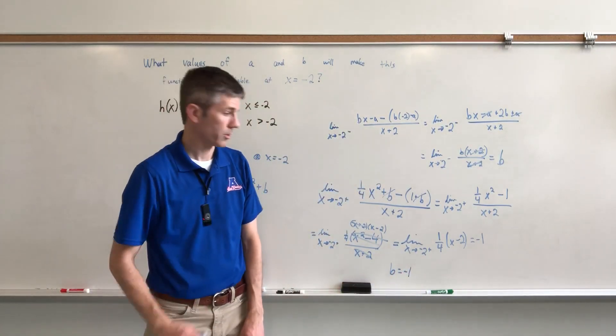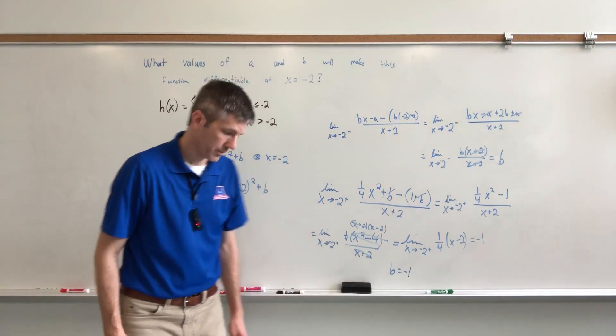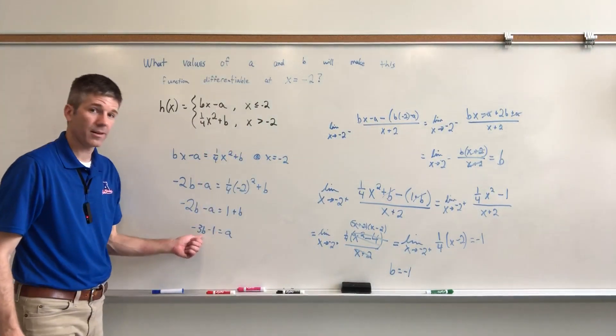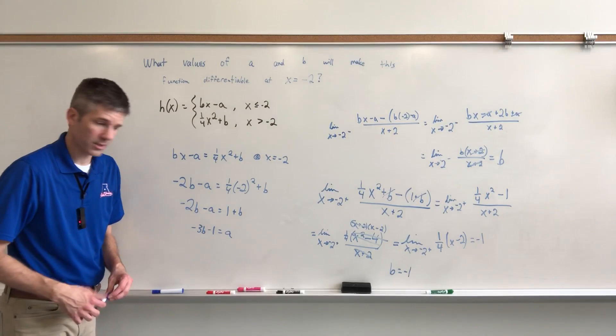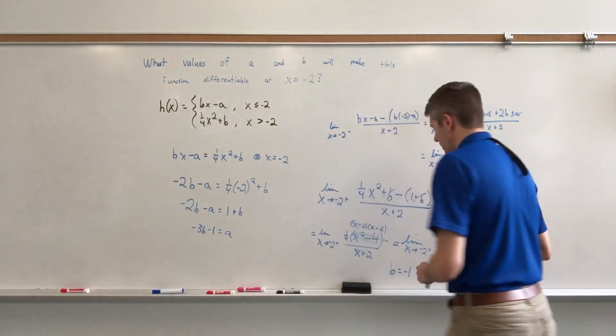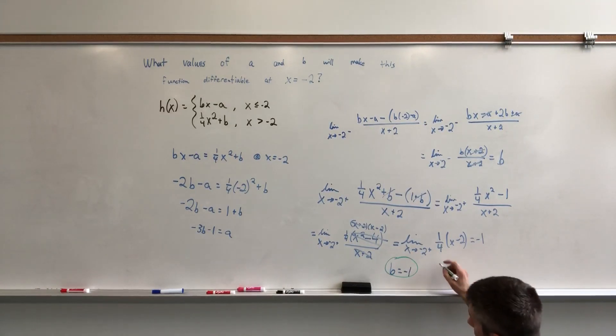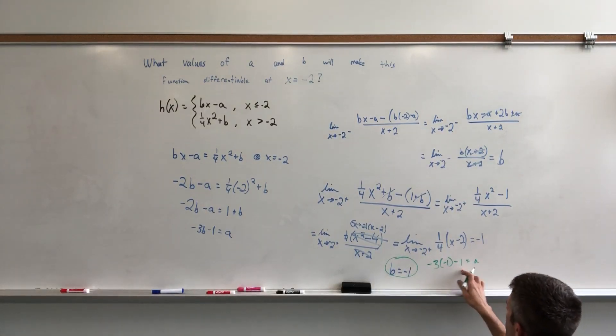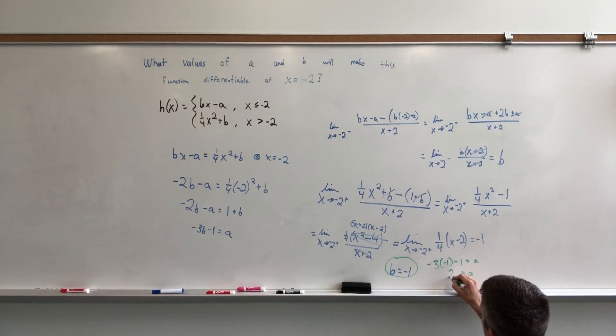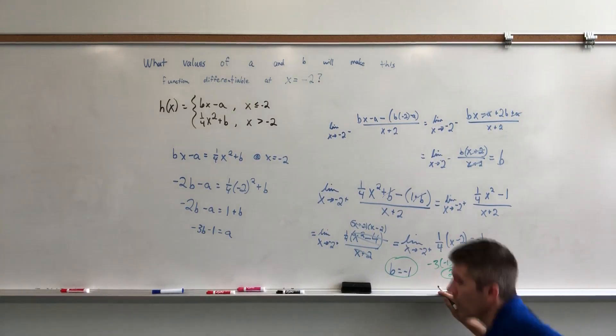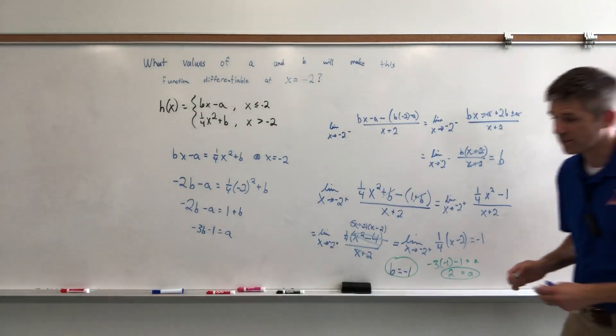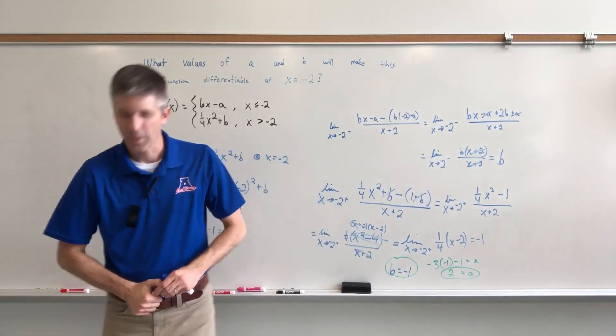We're not done, but we're super close. If B is equal to negative 1, I can plug it in right here and crank out an A value. So let's do that. We're almost finished. I know what B is now. Switching colors here. So I'm using that equation down there. Negative 3B minus 1, and that is equal to A. So 3 minus 1. So A is equal to 2. Done. We just found A, we just found B. We know what they are.